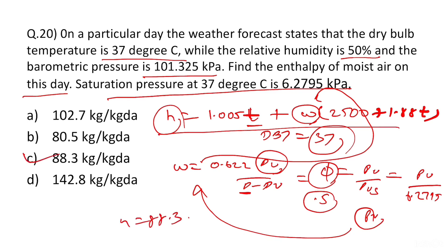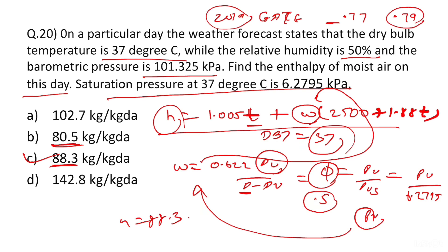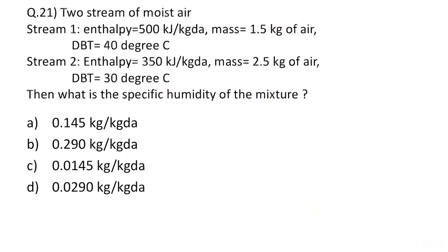Note that 88.3 and 80.5 have a large difference — they are not close. In GATE 2019, my answer was 0.79 but the correct answer was 0.77 (a numerical type question). Even with an allowed range, my answer was marked wrong. This shows how important accuracy is in GATE.